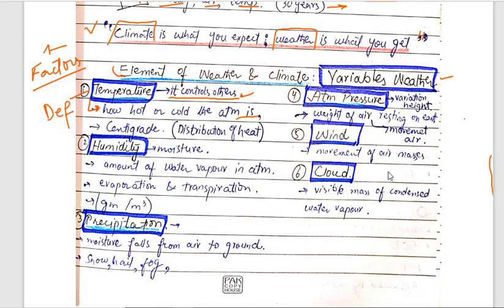We measure temperature in centigrade. It represents the distribution of heat in the atmosphere. You need 2 to 4 lines to explain this factor.